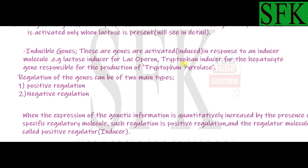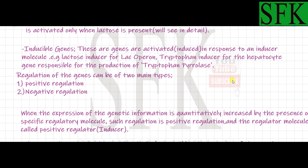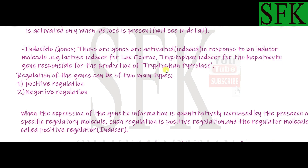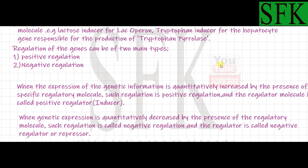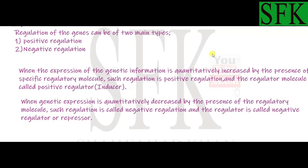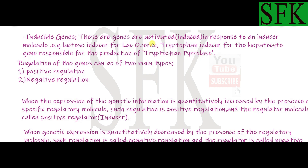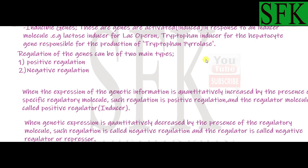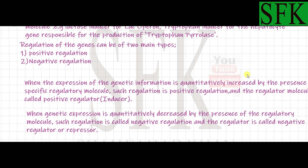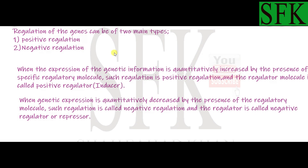Another example is tryptophan — an amino acid. If tryptophan is present, it will induce the production of the enzyme tryptophan pyrolase in the hepatocytes of the liver. So in the hepatocyte there is a gene that codes for tryptophan pyrolase enzyme, and it will only be expressed when tryptophan is present. We will discuss both the lac operon and the tryptophan system in detail in upcoming lectures, noting their similarities and differences.